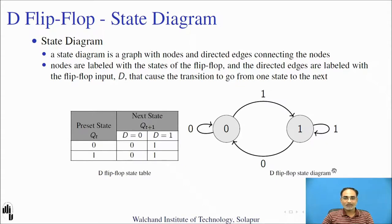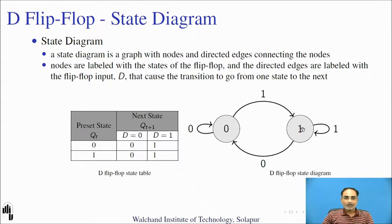Let us understand how to draw the state diagram for the D flip-flop using the state table. When present state is 0 and D is 0, the next state is 0. If present state is 0 and D is 1, the next state becomes 1. When present state is 1 and D is 1, the next state remains 1. If present state is 1 and D is 0, the next state changes to 0. This state diagram shows the transitions between states caused by the flip-flop inputs.